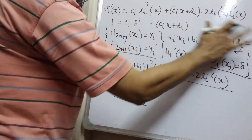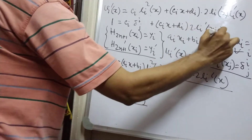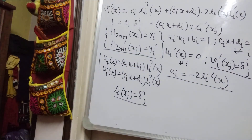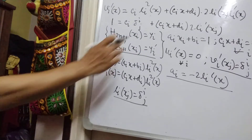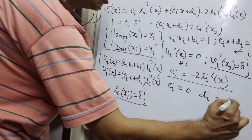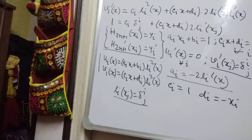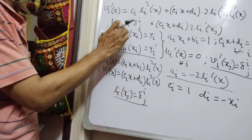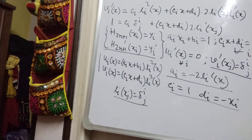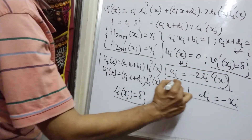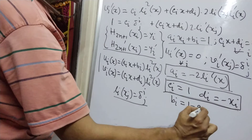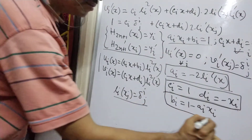To match the condition v_i prime(x_j) = δ_{ij}, we must have c_i = 1 and d_i = -x_i, because c_i·x_i + d_i must equal 0 and c_i must be 1 so the expression matches. Also from a_i·x_i + v_i = 1 and the value of a_i, we get v_i = 1 - a_i·x_i.